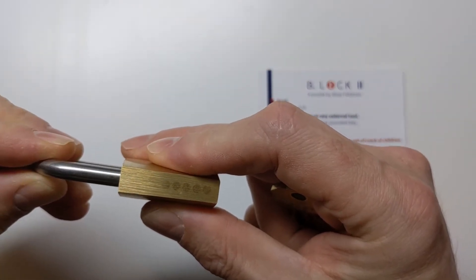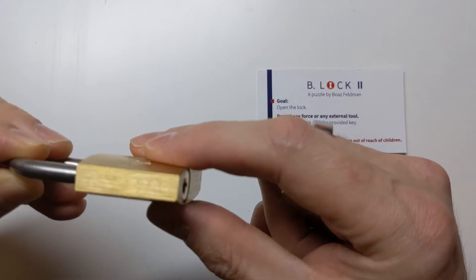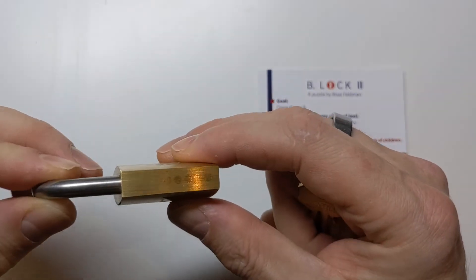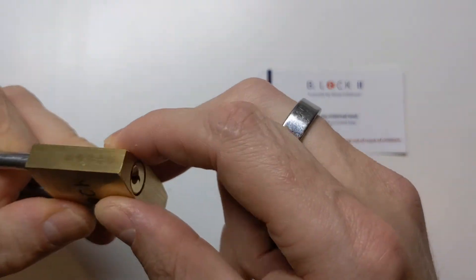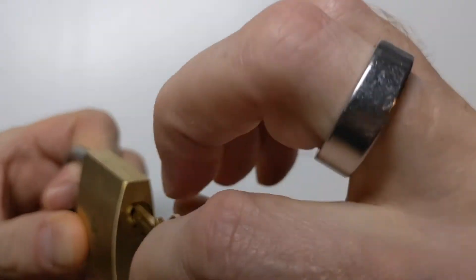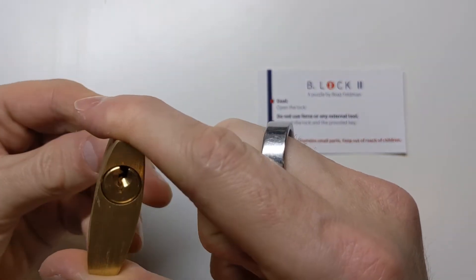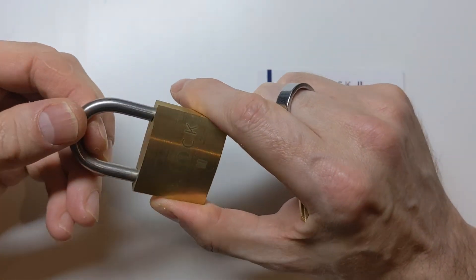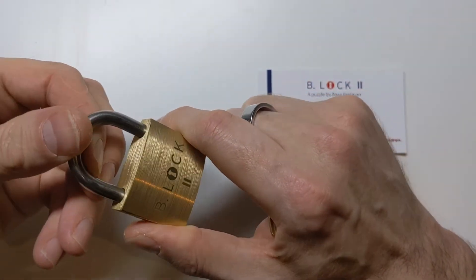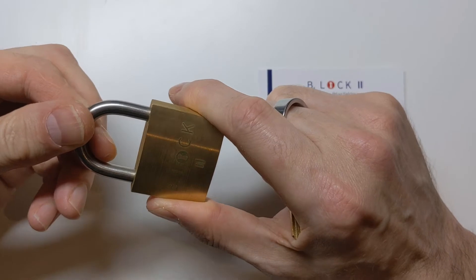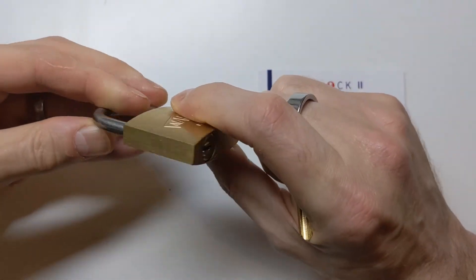Now, interestingly, the shackle goes in and out, perhaps more than I would have expected. I'm just going to pull the shackle out and see what happens. Does that let me turn it at all? Nope. I'm going to guess that's got something to do with it, because you wouldn't normally expect the shackle to pull out that far on a locked padlock.